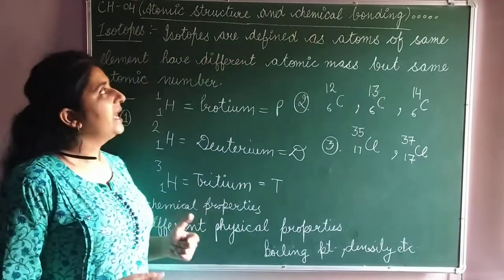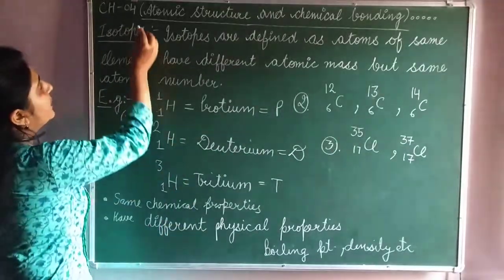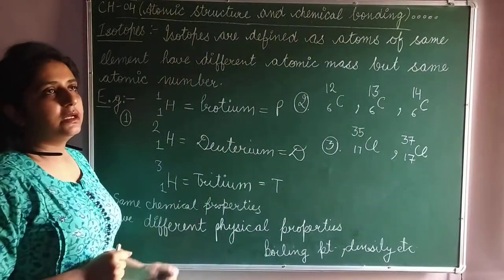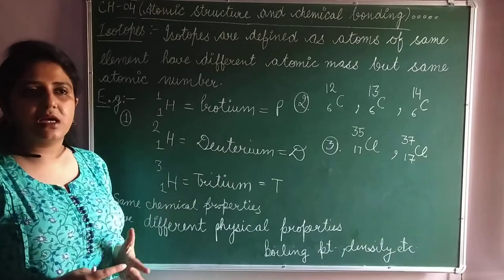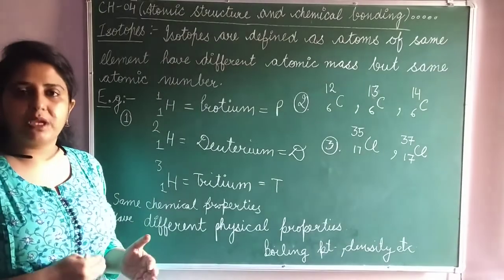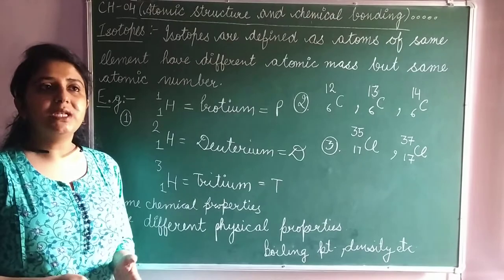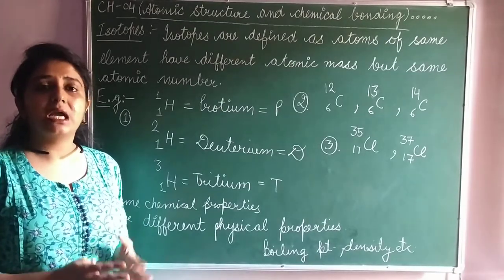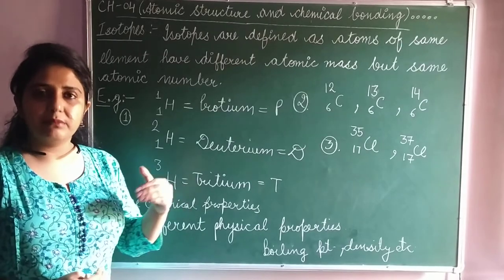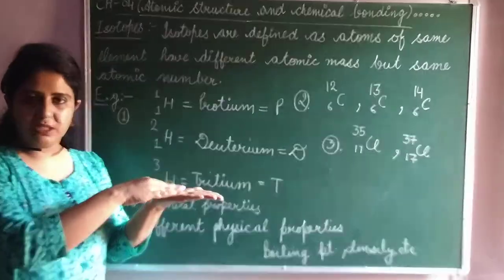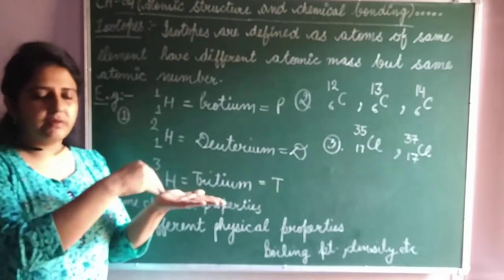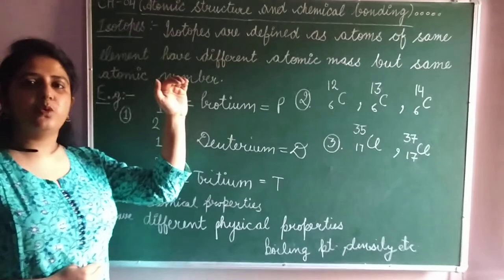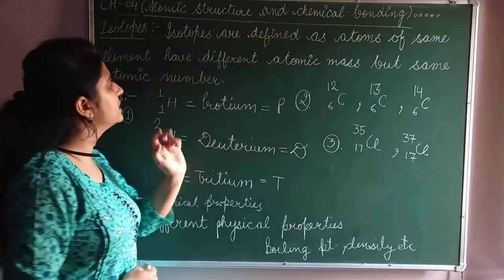Good morning students. As we are discussing chapter number 4, Atomic Structure and Chemical Bonding. In the last video, we discussed the atomic mass and atomic number of an element, and what information we get from the symbol of an element. The atomic number is written at the base position as a subscript, and the atomic mass at the upper position as a superscript.